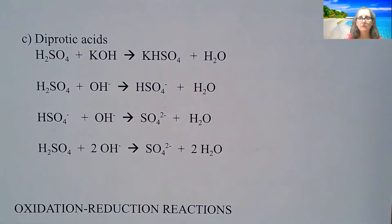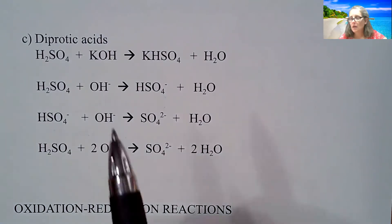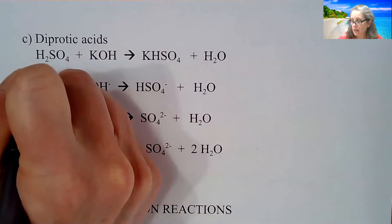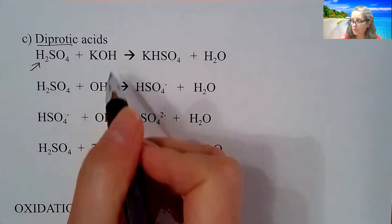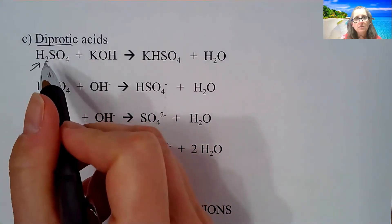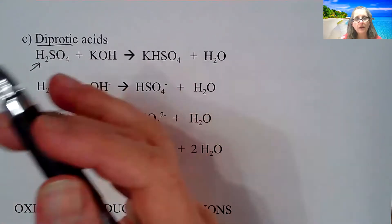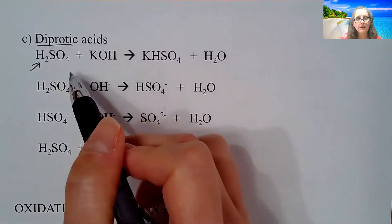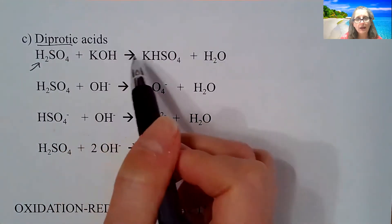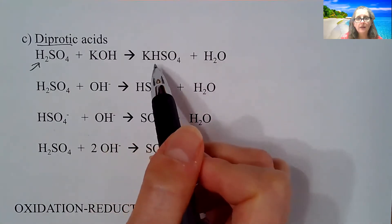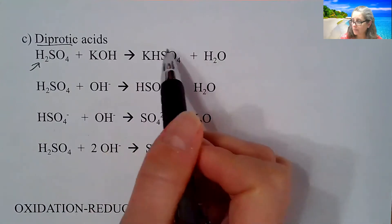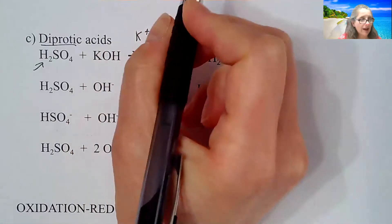So one other thing I want to mention before we move on to oxidation reduction reactions is some acids like sulfuric acid, they have two H's. So that's what it means to be diprotic. So when we're looking at these types of reactions, those hydrogens don't pop off together. They do it one at a time.